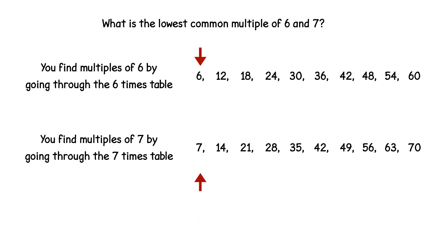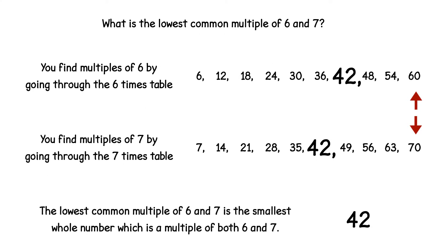Then we scan both sets of numbers for the lowest number in both lists. In this case it's forty-two. So the lowest common multiple of six and seven is forty-two.